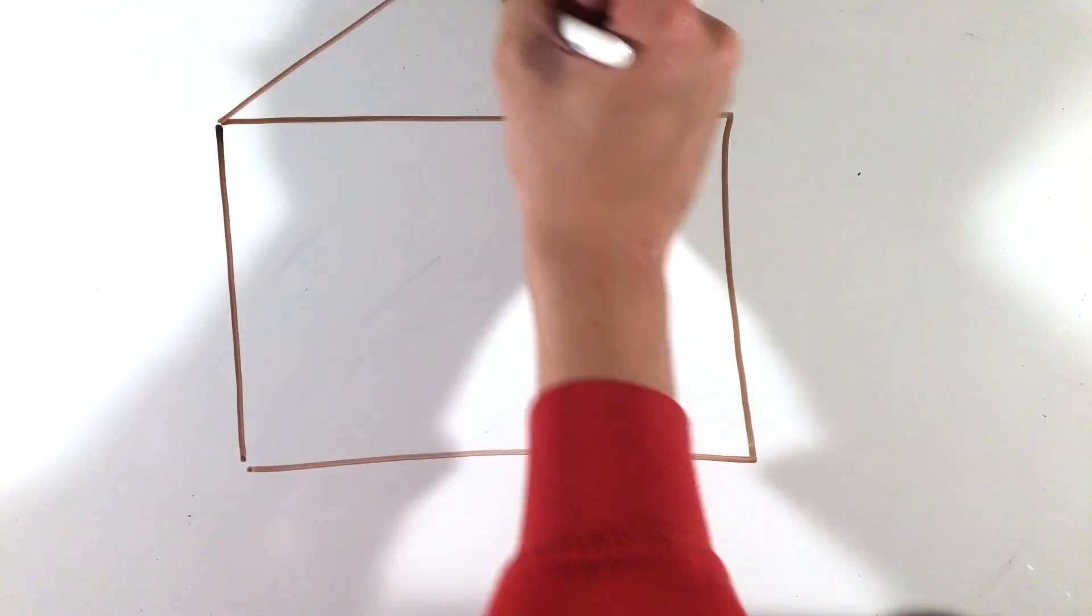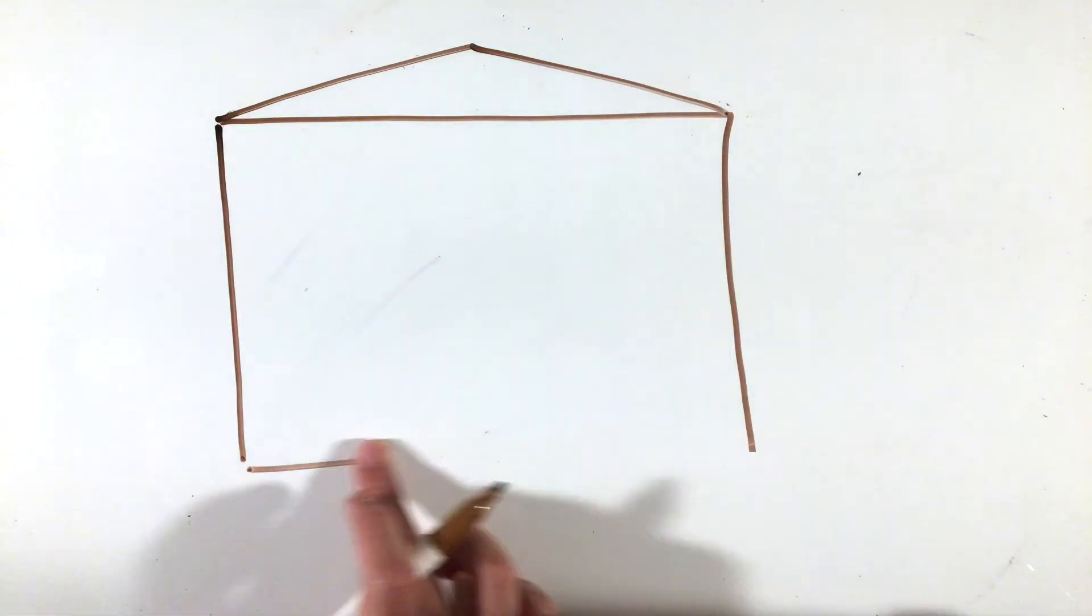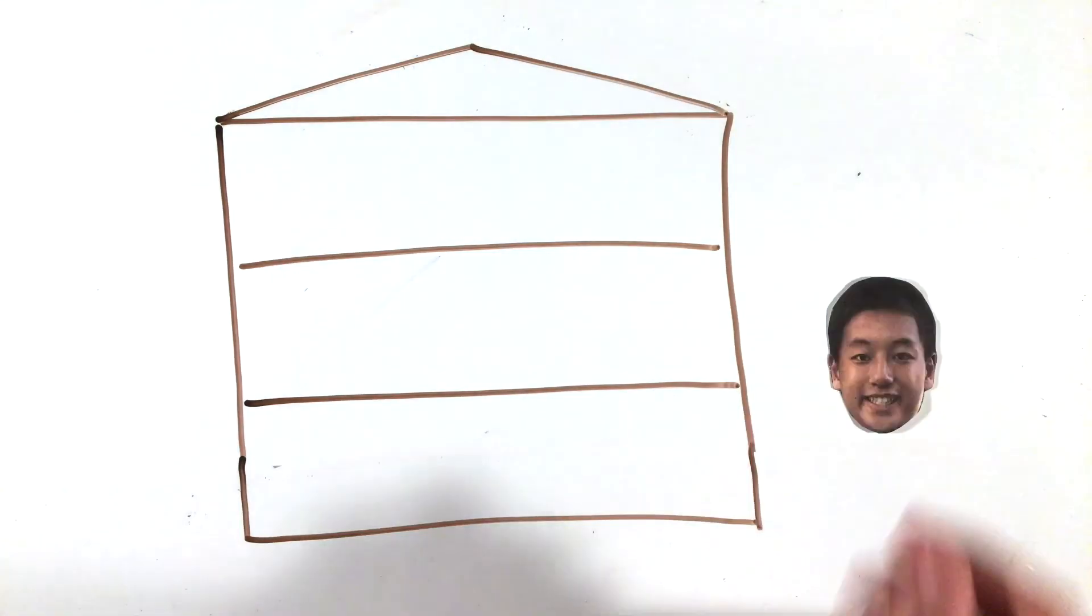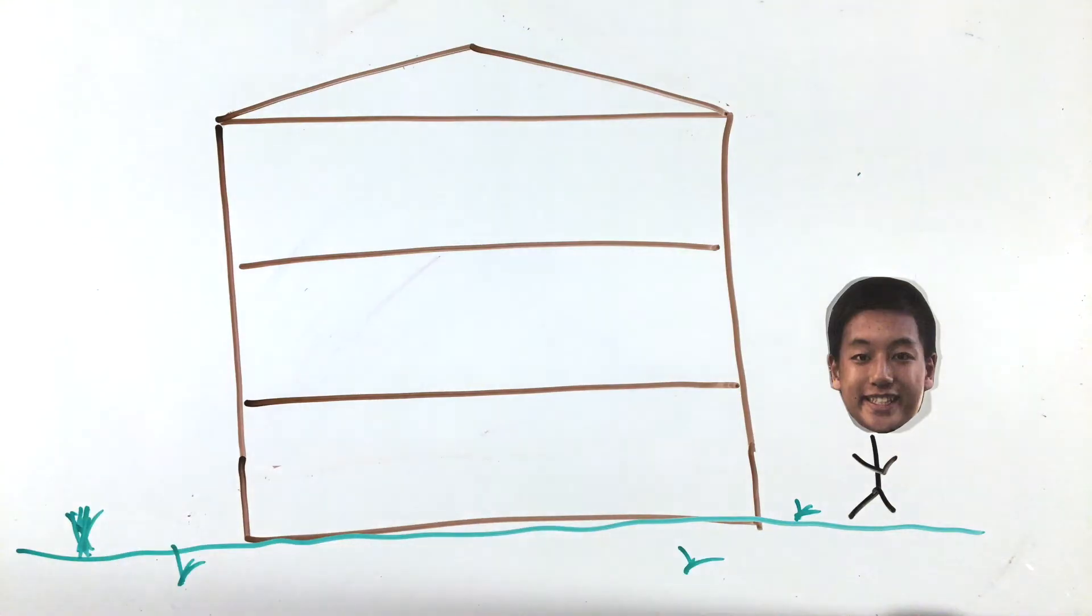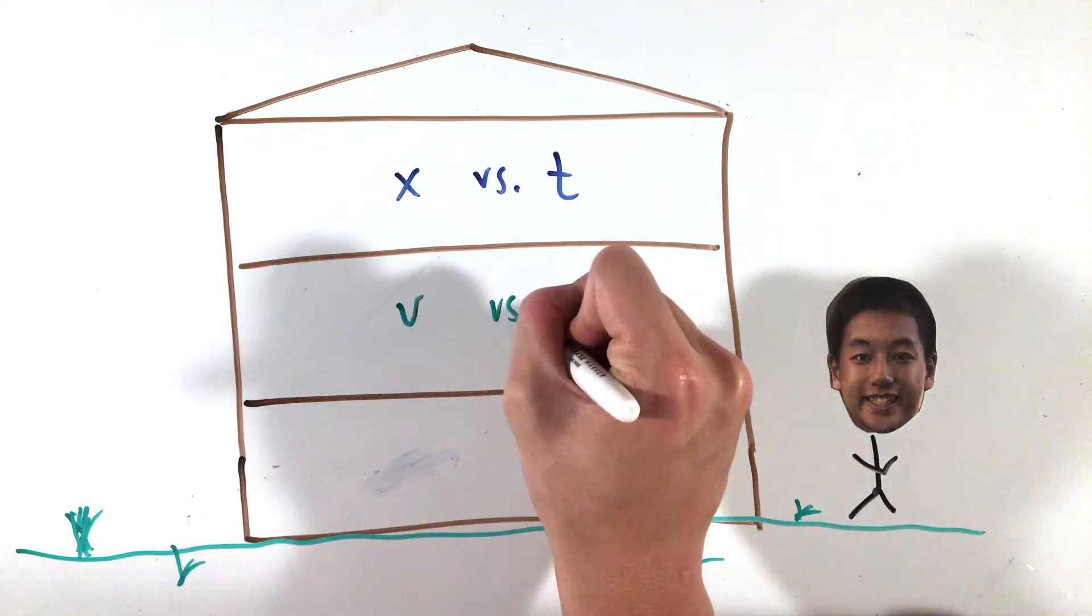However, many questions will ask you to interpret or convert one type of graph to another type. For solving these types of questions, I like to think of position, velocity, and acceleration as three different levels or, say, floors of a house,